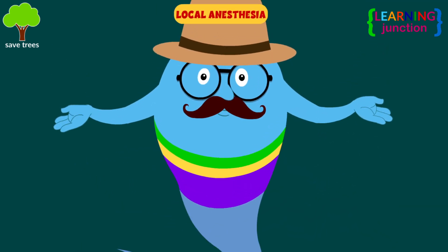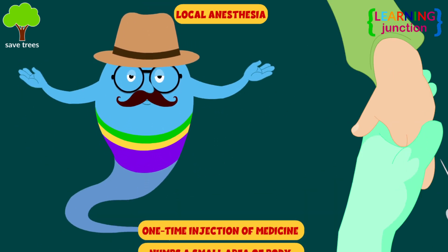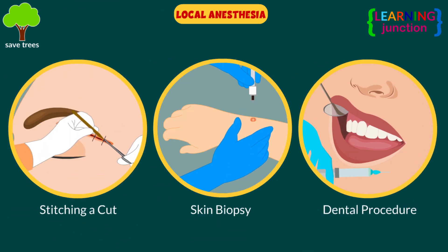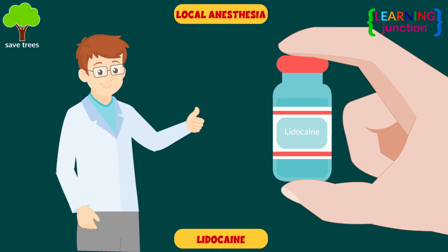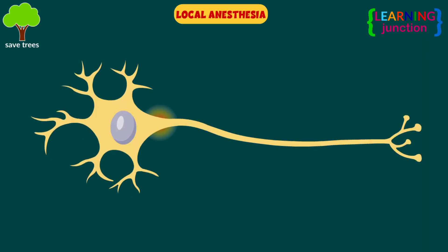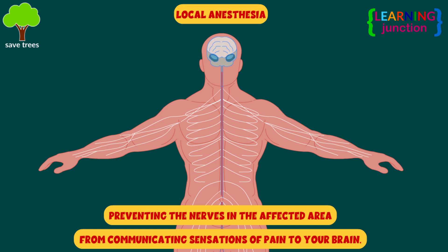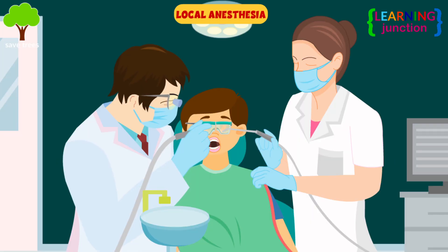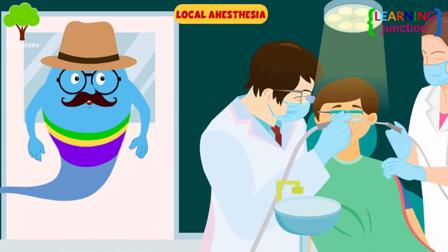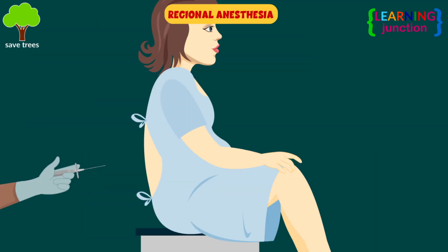Local anesthesia is a one-time injection of medicine that numbs a small area of the body. It's used for performing dental procedures, a skin biopsy, or stitching a deep cut. Lidocaine is the most widely used local anesthetic and works within a few minutes. Local anesthetics work by preventing the nerves in the affected area from communicating sensations of pain to your brain. You'll be awake and alert, but you won't feel pain in the area being treated. Full sensations return after the medicine has worn off a few hours later.